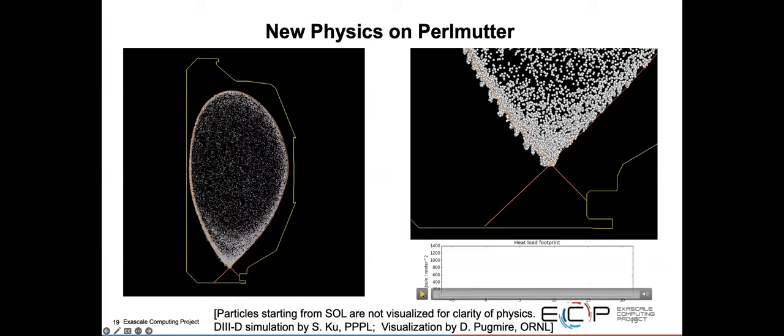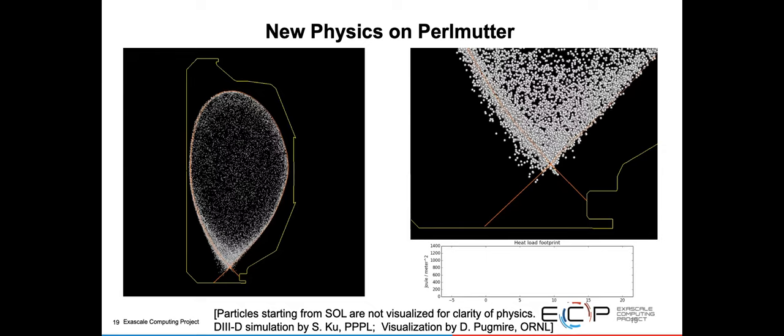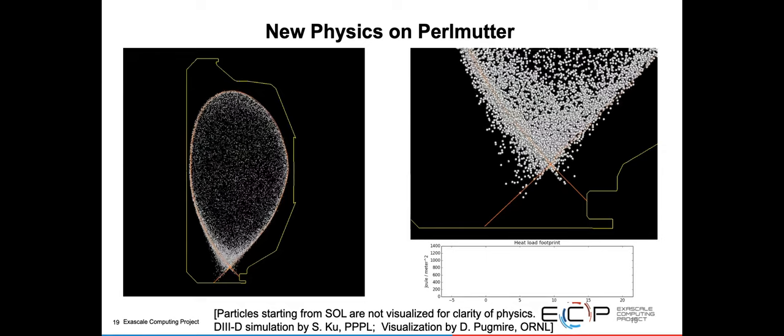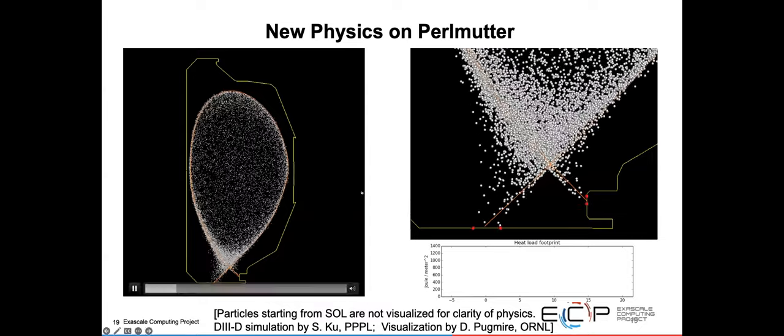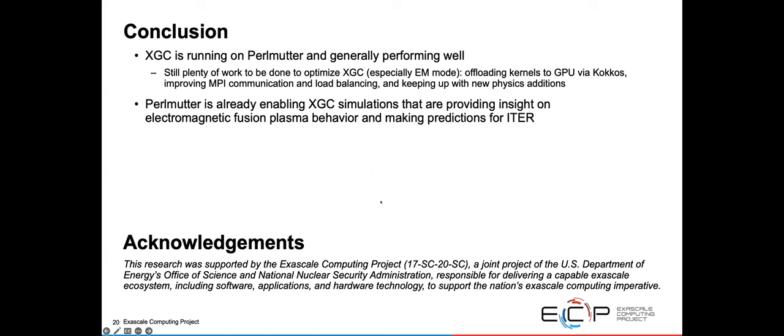Here's just more visualizations of what we've been doing on Perlmutter and enabling this science and new understanding and predictions we're able to make about divertor heat load width. To conclude, XGC is running on Perlmutter and generally performing pretty well. There's still plenty of work to be done, especially in the electromagnetic mode. We need to offload some more kernels, improve MPI communication and load balancing, and continue to keep up with new physics additions. But Perlmutter is already enabling XGC simulations that are providing insight on electromagnetic fusion plasma behavior and making predictions for ITER.